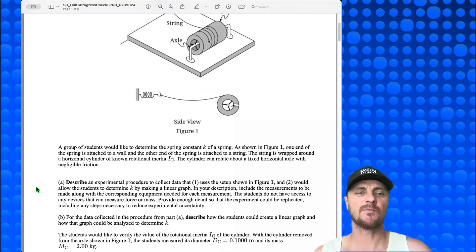Part A, describe an experimental procedure to collect data that (1) uses the setup shown in figure 1, and (2) would allow the students to determine k by making a linear graph. In your description, include the measurements to be made, along with the corresponding equipment needed for each measurement. The students do not have access to any devices that can measure force or mass. Provide enough detail so that the experiment could be replicated, including any steps necessary to reduce experimental uncertainty.